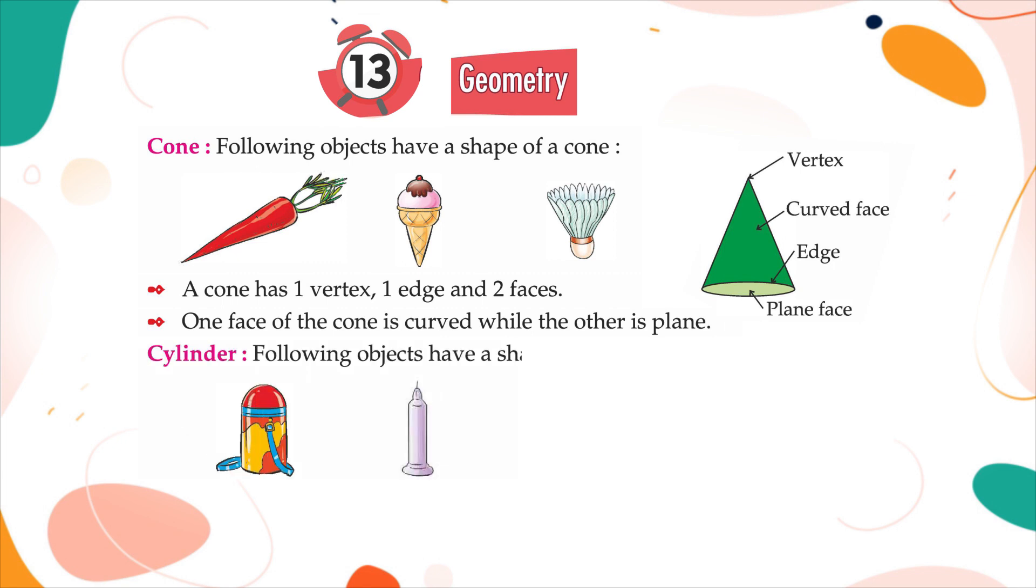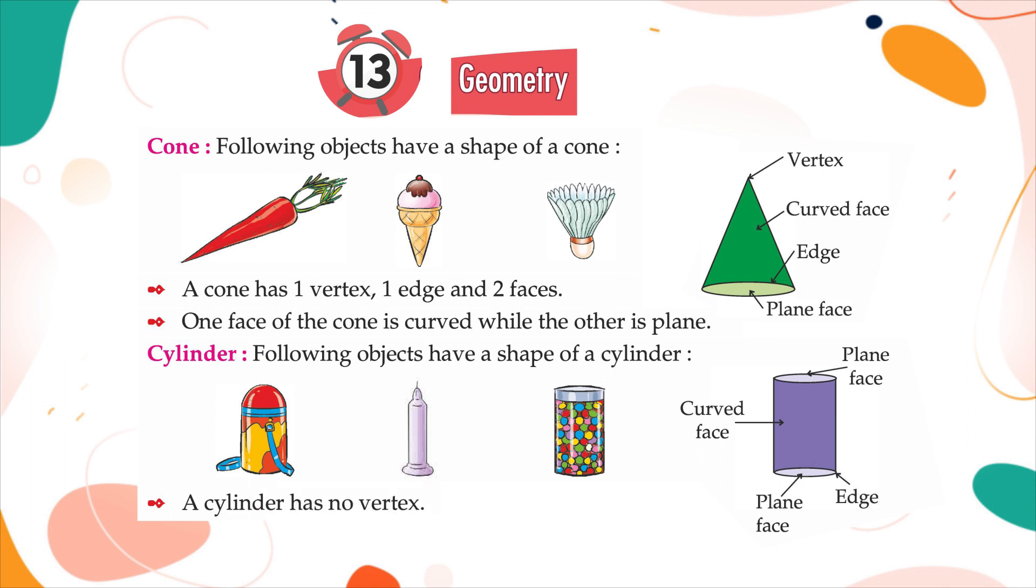Cylinder: Following objects have a shape of a cylinder. A cylinder has no vertex. It has two edges and three faces. One face of a cylinder is curved while the other two are plane.